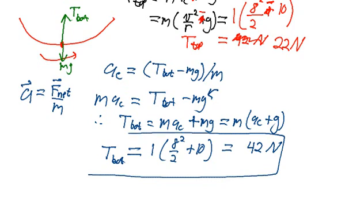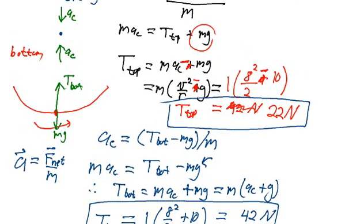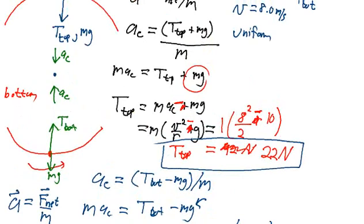The tension at the top is only 22 newtons. And the reason why those numbers are different is because the force diagrams clearly show that the direction of the tension in the weight is different at the top and the bottom. And so we have to account for those directions.